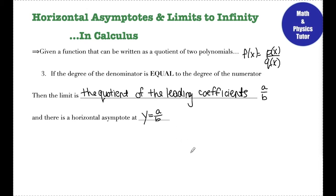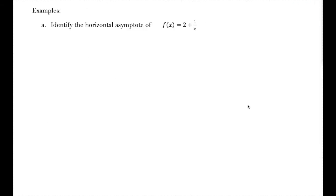That was a quick review of horizontal asymptotes and limits to infinity. If this was too quick, go back and check out that first video on horizontal asymptotes and limits to infinity linked in the description. Now let's look at a couple of examples that are a little bit tougher — more problems you would see in a calculus-level course.